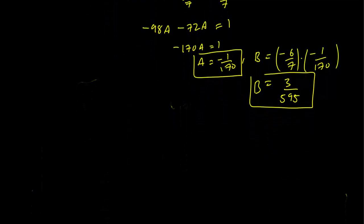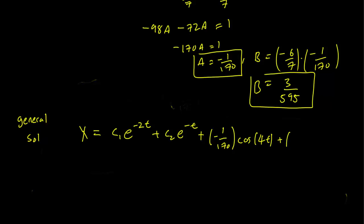So right now, we can write our general solution. As x equals c1*e^(-2t) + c2*e^(-t) + (-1/170)*cos(4t) + (3/595)*sin(4t).